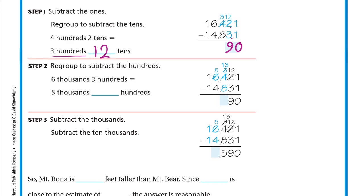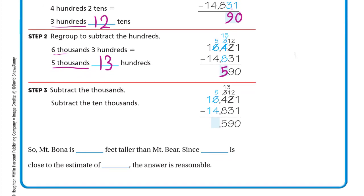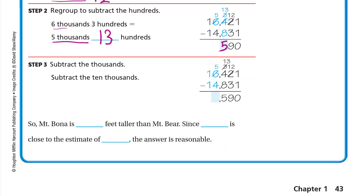Now the hundreds: three minus eight — we can't, so we regroup again. The six thousands becomes five thousands, and we take one thousand making ten hundreds. Ten plus three is thirteen hundreds. Thirteen minus eight is five. Then thousands: five minus four is one. Ten thousands: one minus one is zero. The difference is 1,590. Mountain Bona is 1,590 feet taller than Mountain Pier. Since 1,590 is close to the estimate of one thousand, the answer is reasonable.